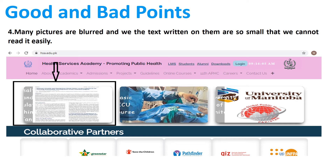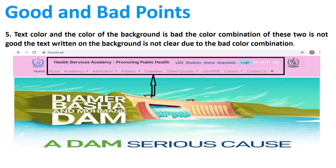The fourth one is that many pictures are blurred and the text written on them is so small that we cannot read it easily, as you can see in this picture. The fifth one is that the color combination of many menus is not suitable and it is not readable for us — it's not clear.